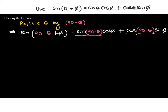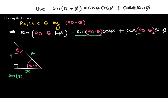Consider a right-angle triangle with one angle theta and the other 90 − theta, with sides labelled x, y, and z. Sine(90 − theta) = y/z, which is the same as cos theta = y/z. So sine(90 − theta) = cos theta.